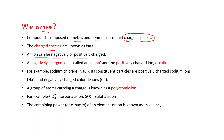A negatively charged ion is called an anion, and a positively charged ion is called a cation. For example, sodium chloride is the compound made up of sodium and chlorine. Sodium is a metal and chlorine is a non-metal. Its constituent particles are positively charged sodium ions, represented as Na+, and negatively charged chloride ions, that is Cl-.